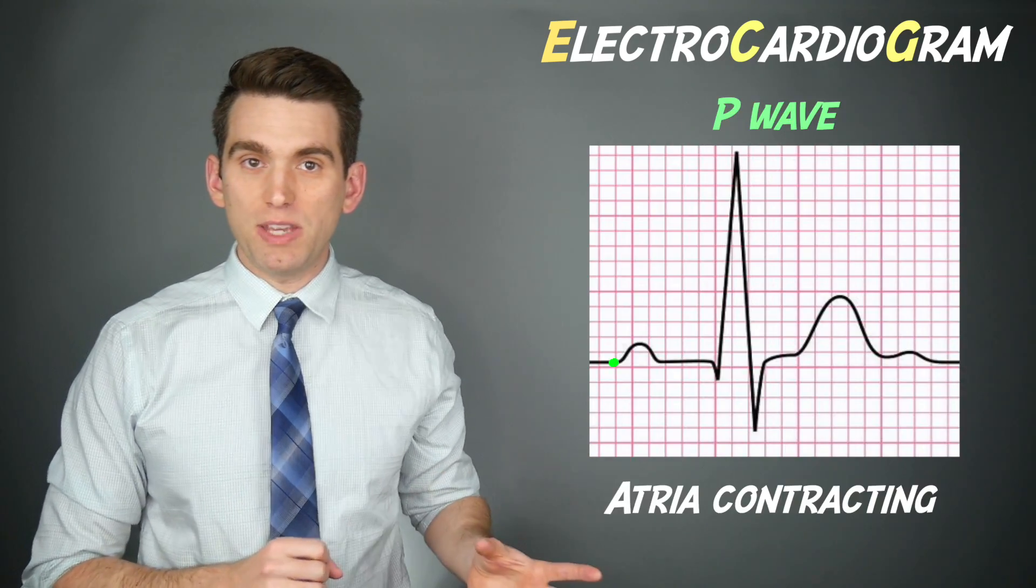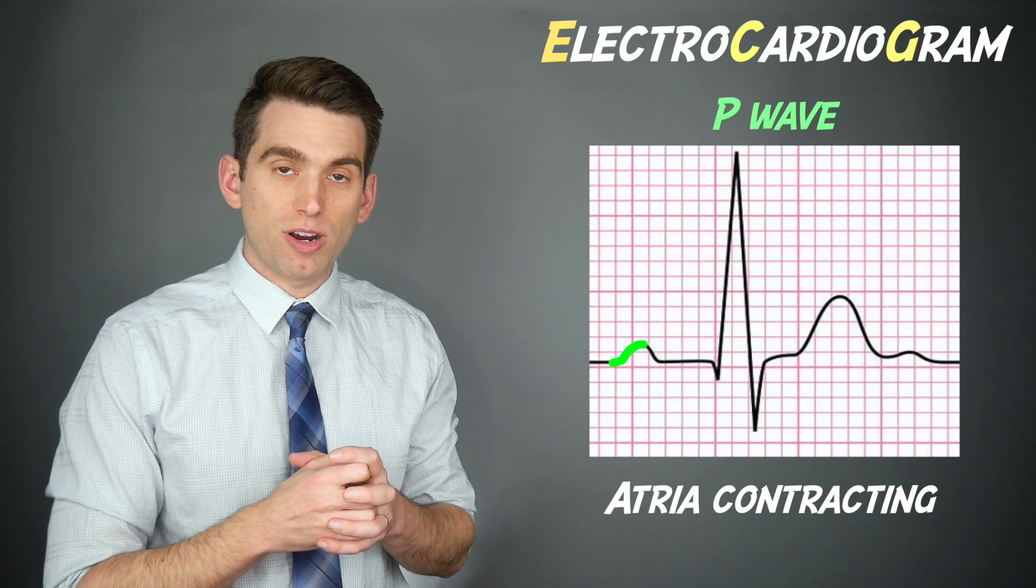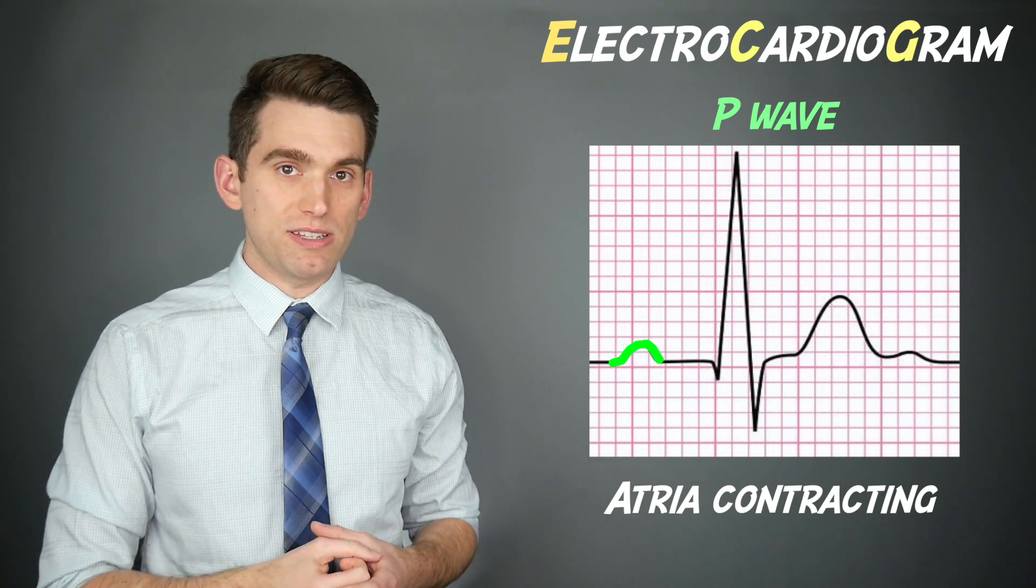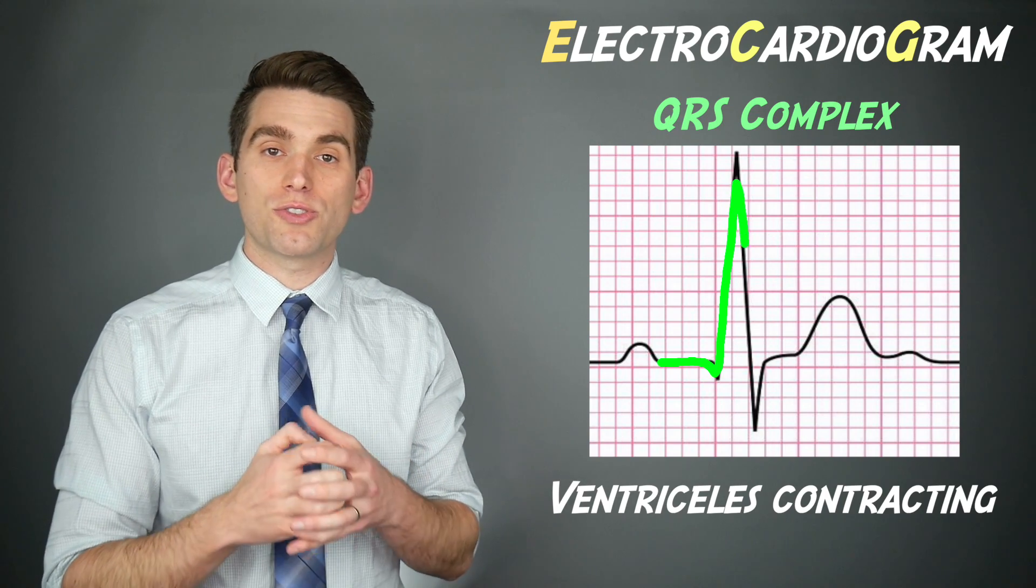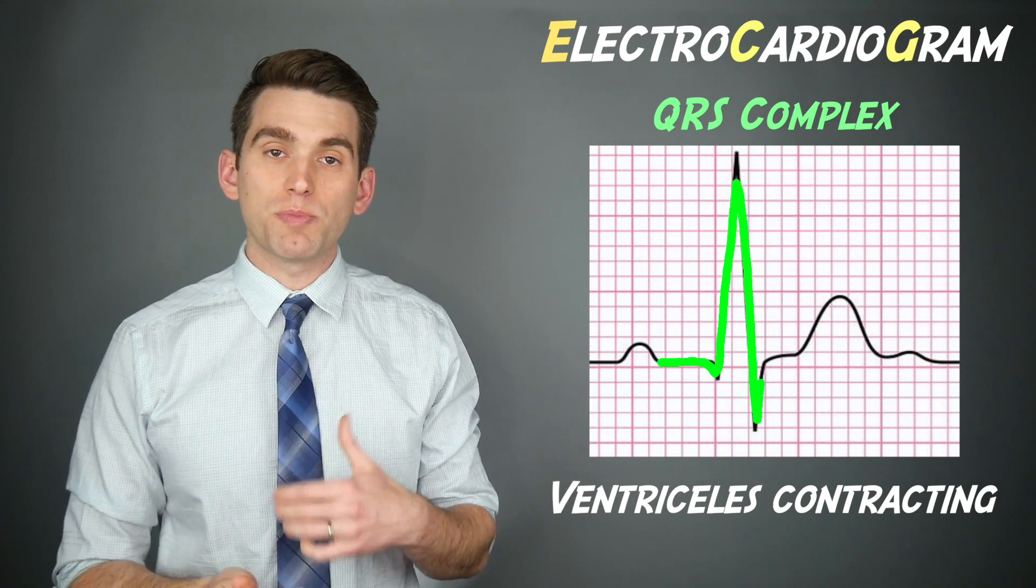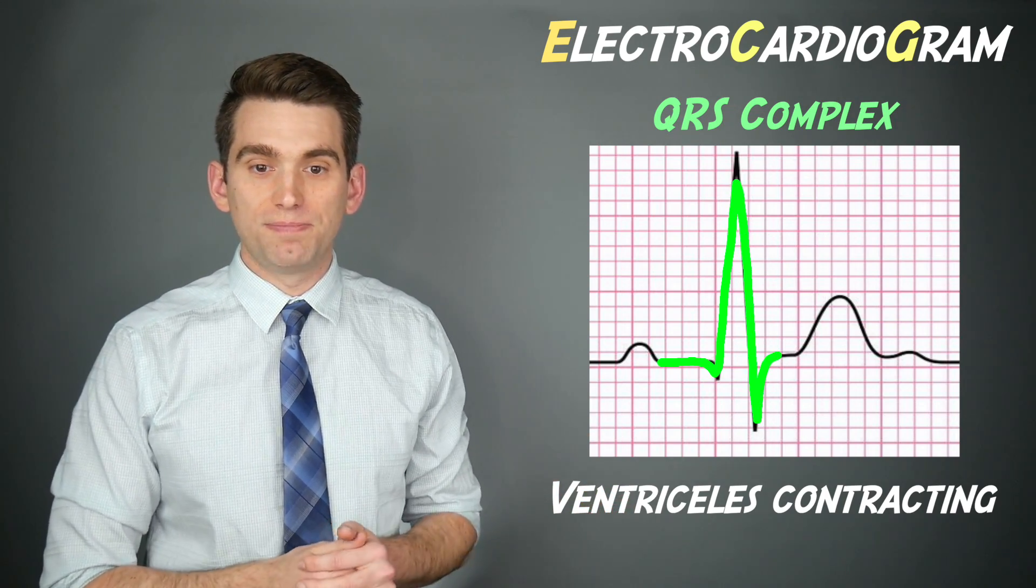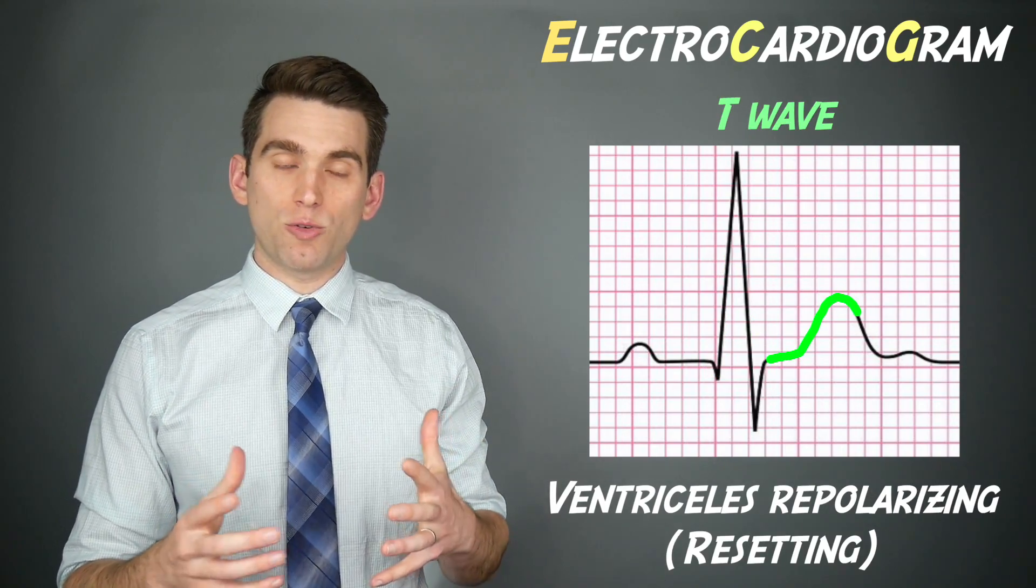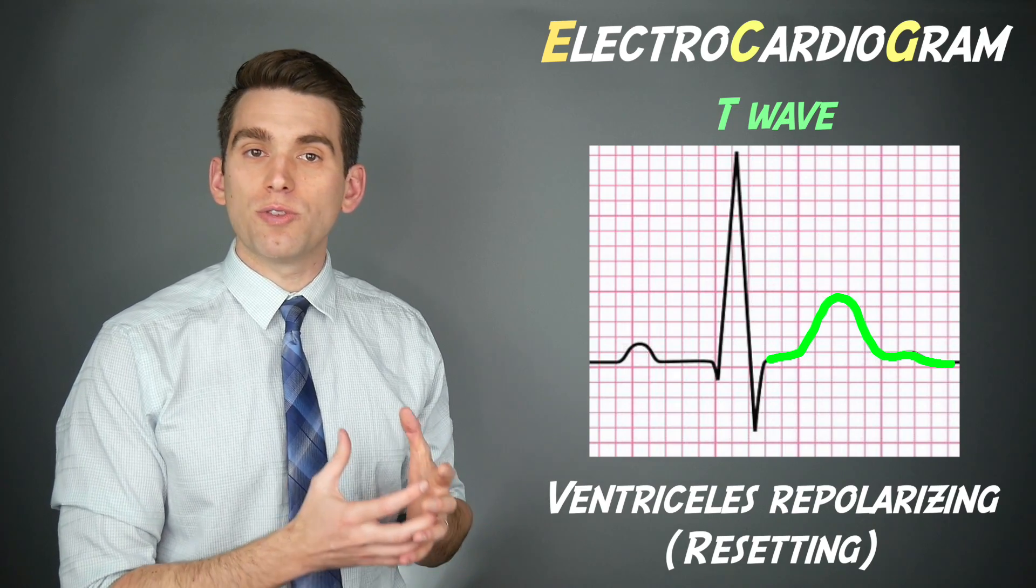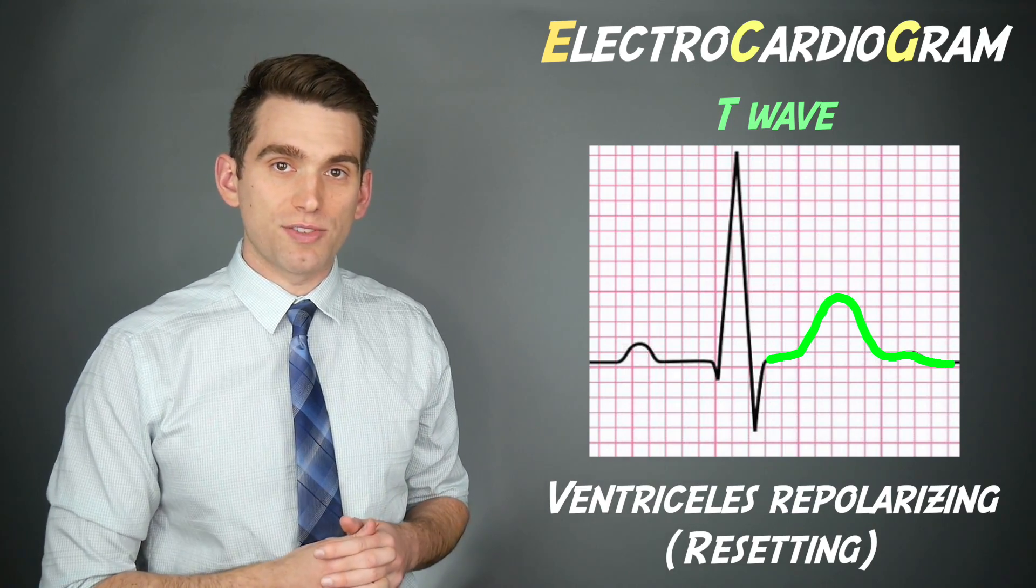This first bump we see is called the P wave and that's whenever the atrium of the heart is depolarizing and squeezing. This next part is the QRS complex which represents the depolarization or squeezing of the ventricles pumping the blood out to the body and the lungs. Then the final bump here is the T wave which represents the repolarization or the re-establishment of that membrane potential within those ventricle muscle cells.